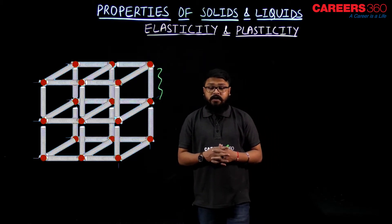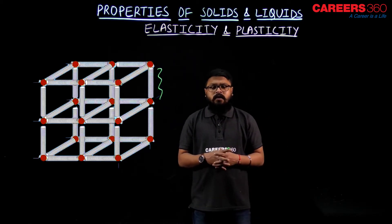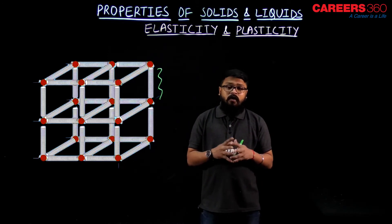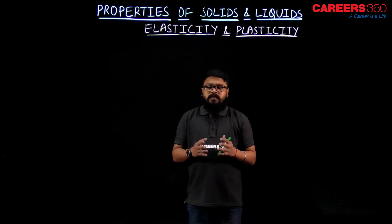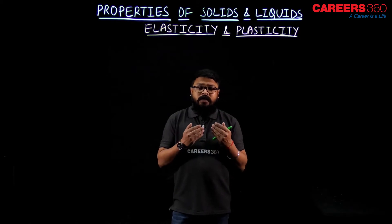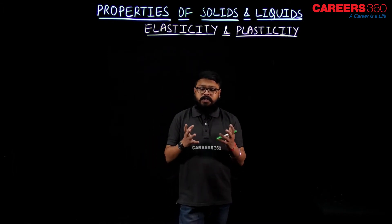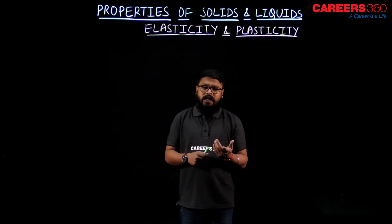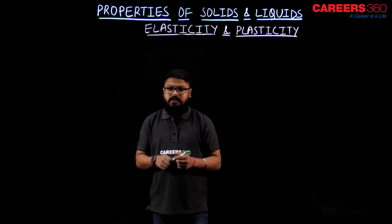When there is a change in shape and size of a rigid body by applying sufficient external force, can we say there are two chances — the body may get back to its original shape and size, or it may not. Now let's see what those two properties are. There are two properties based on what happens when we remove the external force that we applied to deform the body. The body may come back to its original shape or it may not, and depending on these two phenomena, we give the properties the names elasticity and plasticity.